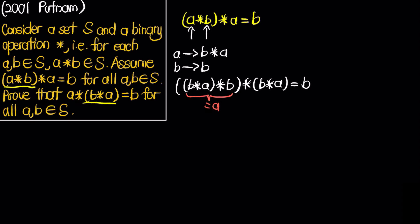Most importantly, I want to point out that B star A is obviously an element of the set S because A and B are elements of S.